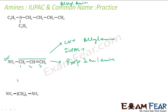Please note: the numbering has to start from the carbon attached to the NH2 group. The other direction is incorrect numbering. The carbon attached to the NH2 group is my reference carbon and should get the least possible number.